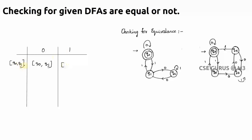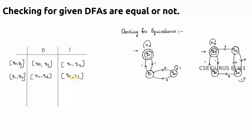Now check q0 on 1 and q3 on 1: we get q1 and q4 respectively, giving the new pair (q1, q4). q1 is non-final and q4 is non-final — both non-final, so we continue. Now for pair (q1, q4): q1 on 0 gives q2, q4 on 0 gives q6, so we get pair (q2, q6). Both q2 and q6 are non-final — no problem. For q1 on 1 gives q0, q4 on 1 gives q3, so pair (q0, q3) — both are final states, no problem.